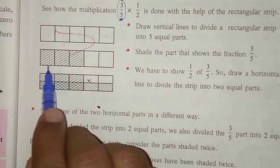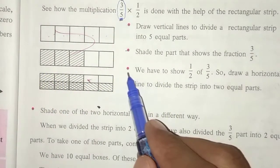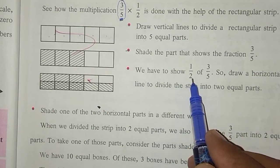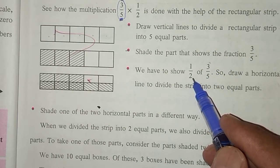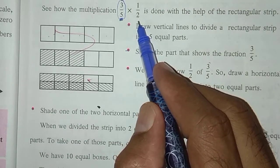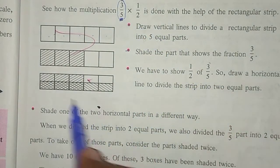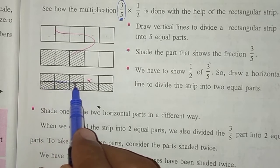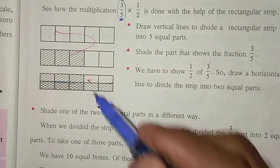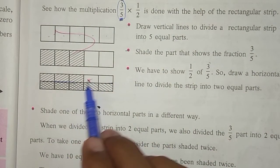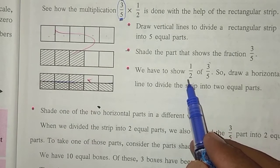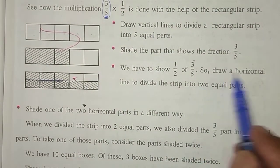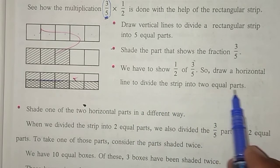So fraction 3/5 is taken. Then we have to show 1/2 of 3/5 — that is, 1/2 of 3/5, meaning half. So a line is drawn from the center, dividing the strip into 2 equal parts. Why is it divided into 2 equal parts? Because we have to multiply it with half — 1/2 means half. So draw a horizontal line to divide the strip into 2 equal parts.